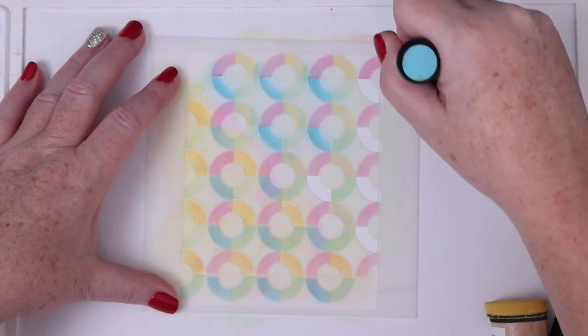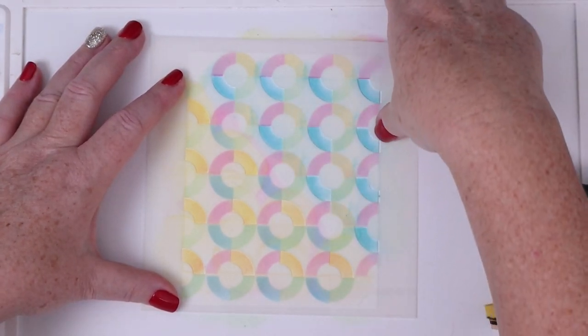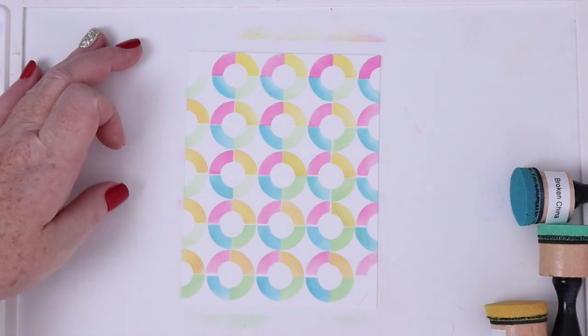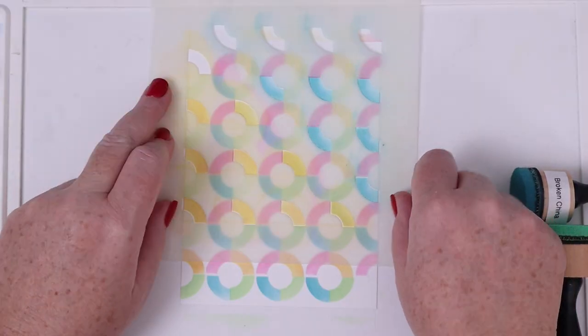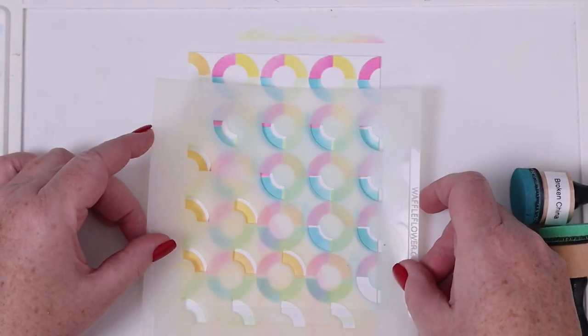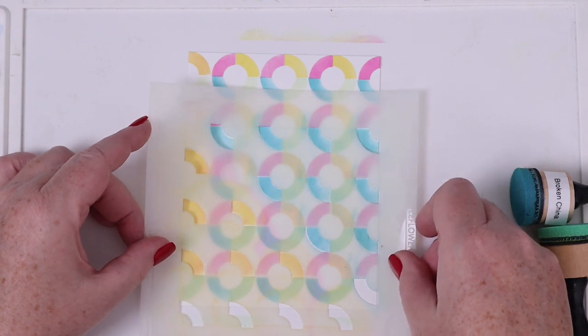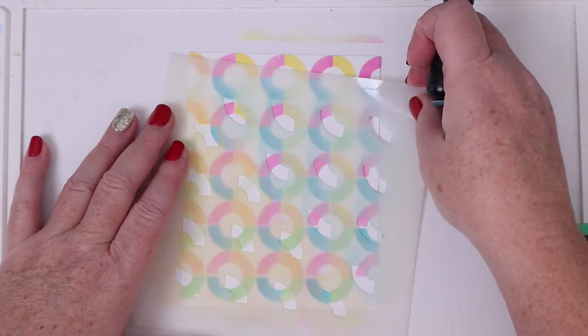I absolutely loved peeling the stencil back to reveal these gorgeous rainbow rings in my favorite colors. I missed a couple of rings, so I just replaced the stencils and added in the colors that were missing. At this point, since the majority of the rings were complete, it was easy to figure out what needed to be added in where, and it was easy to line up the stencil by using the completed rings as placement guides.